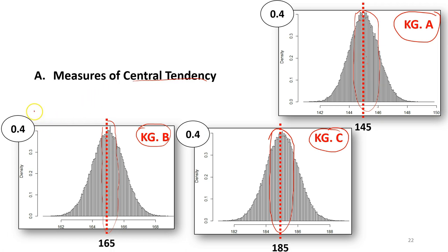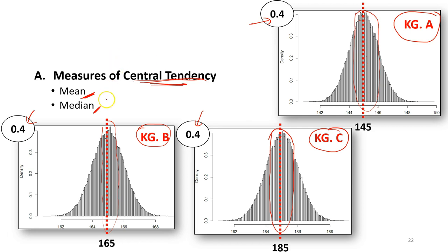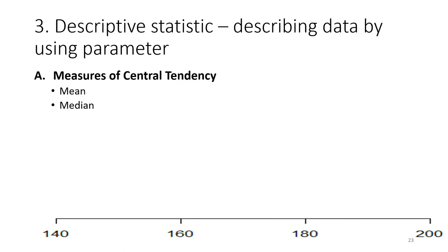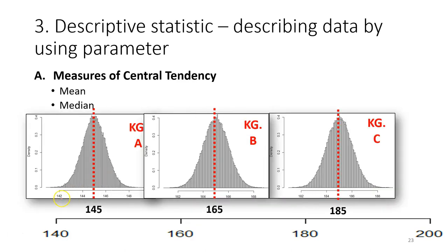We can calculate the center and use the center of tendency to show differences or similarities between different data sets. The parameters we use to measure the center of tendency are the mean and the median. We want to first understand the concept before discussing the calculation. If you plot all the graphs along the same axis you can see very clearly that these data sets are different in their centers.